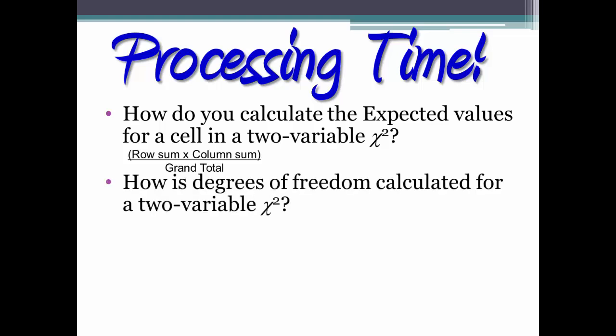How are degrees of freedom calculated for a 2-variable chi-square? The formula is to multiply the number of rows minus 1 by the number of columns minus 1.